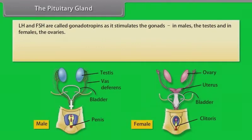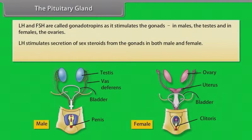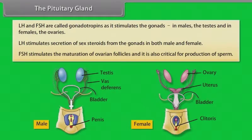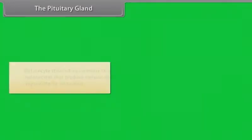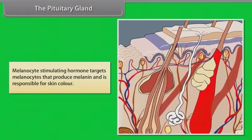LH and FSH are called gonadotropins as they stimulate the gonads — the testes in males and the ovaries in females. LH stimulates secretion of sex steroids from the gonads in both males and females. FSH stimulates the maturation of ovarian follicles and is also critical for the production of sperm. Melanocyte-stimulating hormone targets melanocytes that produce melanin and is responsible for skin coloring.